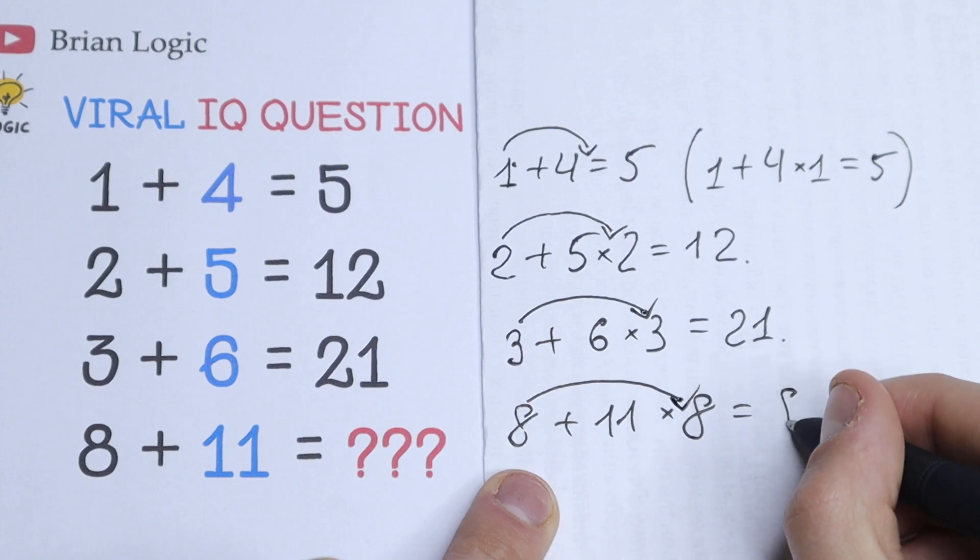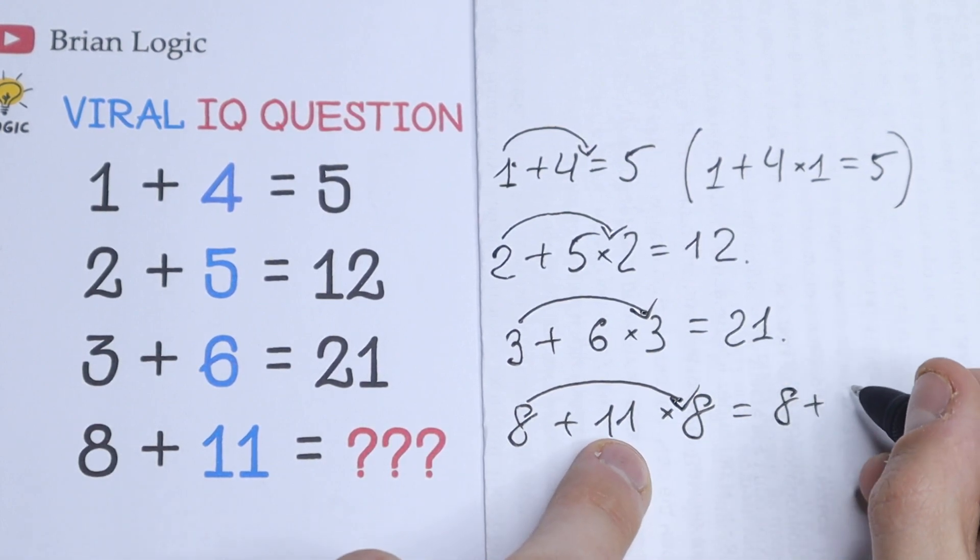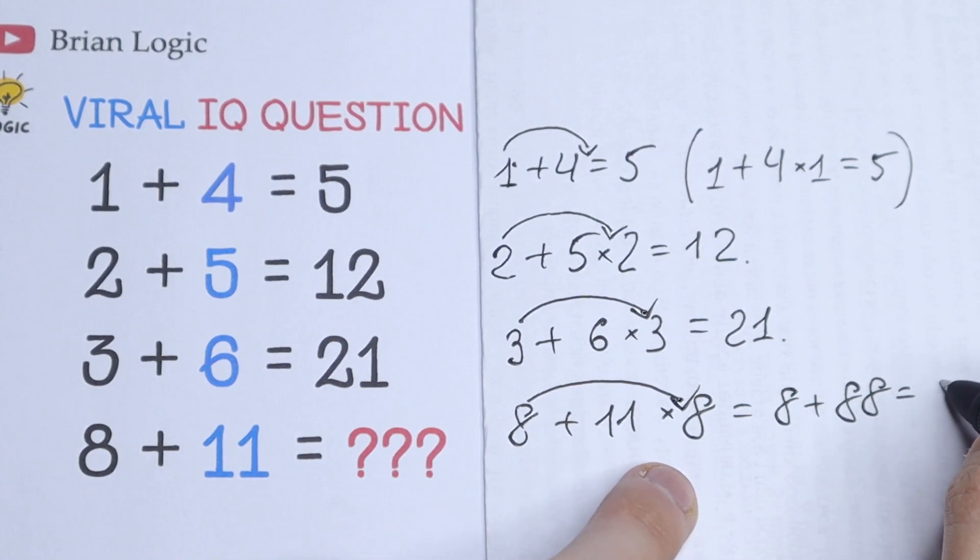As a result we will have 8 plus 11 times 8, it will be 88. And as a result, as you can see, if we add this we will have 96, which is our answer.